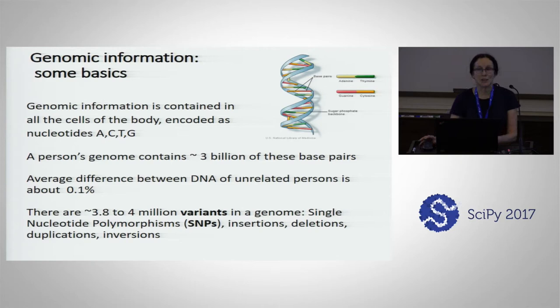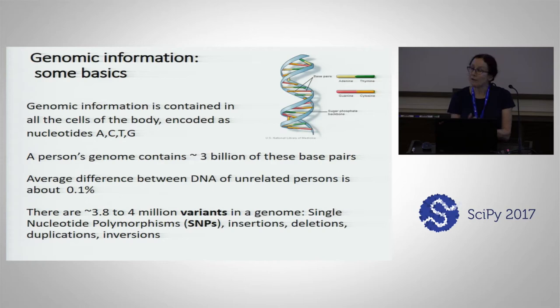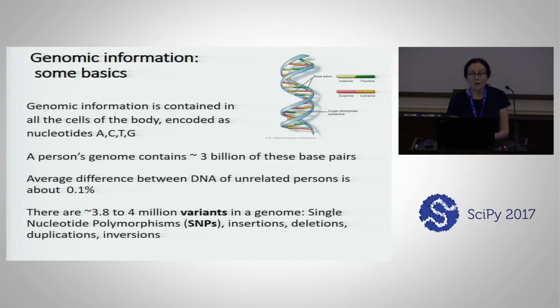A person's genome contains about three billion of these base pairs. We are different from person to person — you share a lot with your close relatives. About half of your genes come from your father and half from your mother. Full-blooded brothers and sisters will share on average half of their genes. But for unrelated people, the average difference between DNA is about 0.1% of the genome.